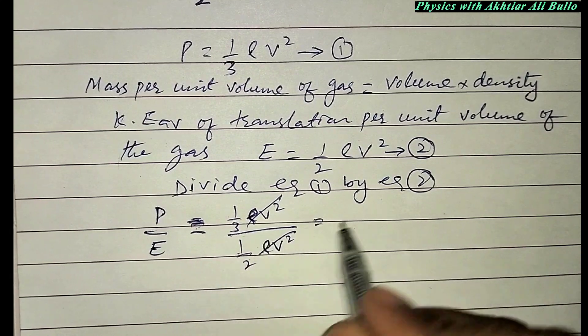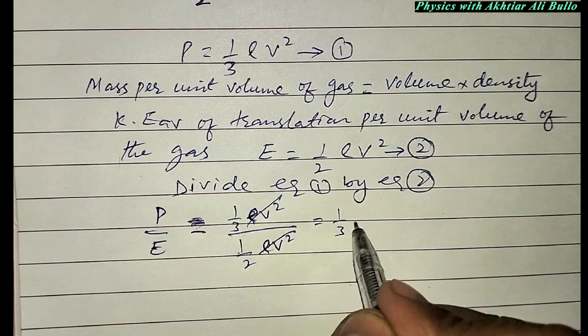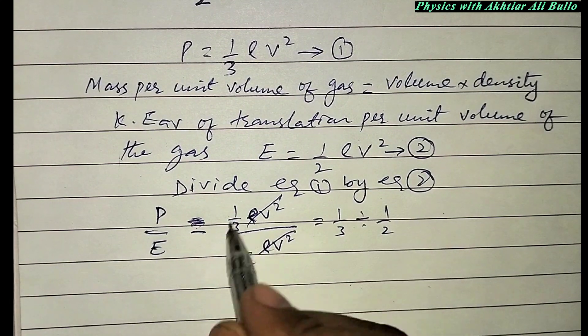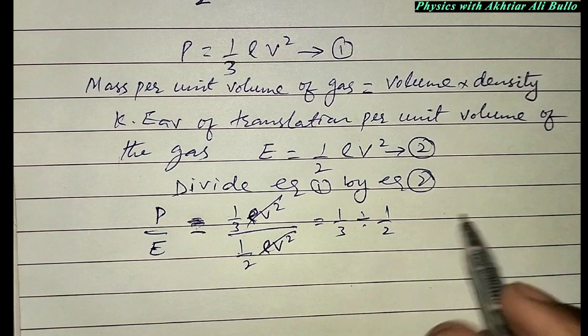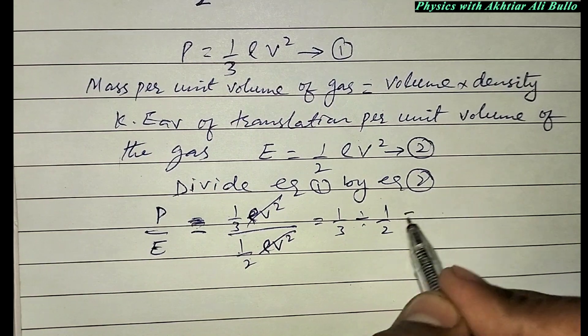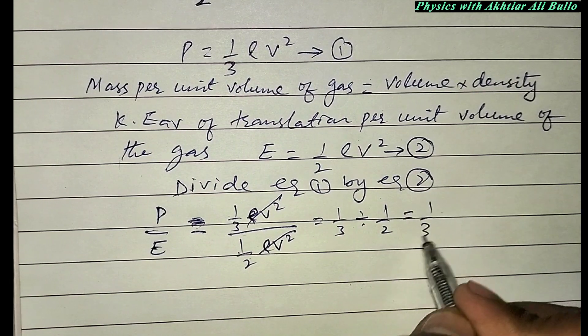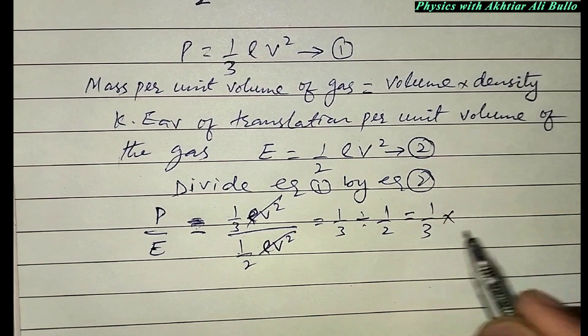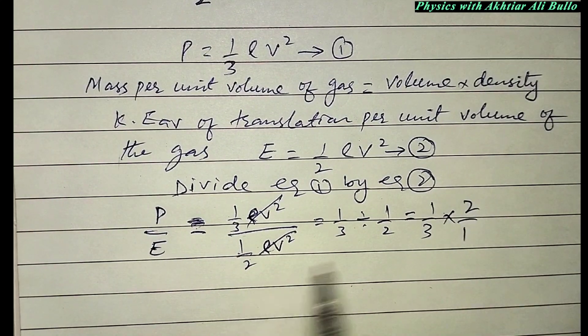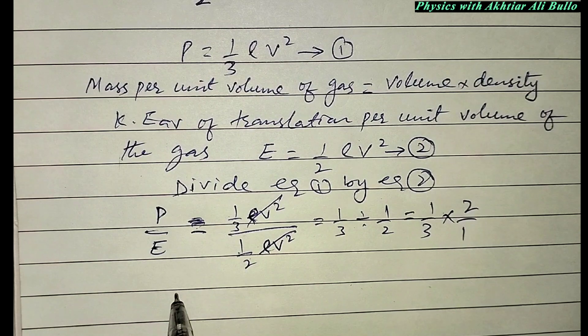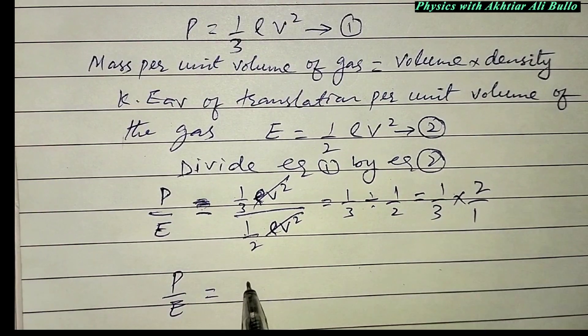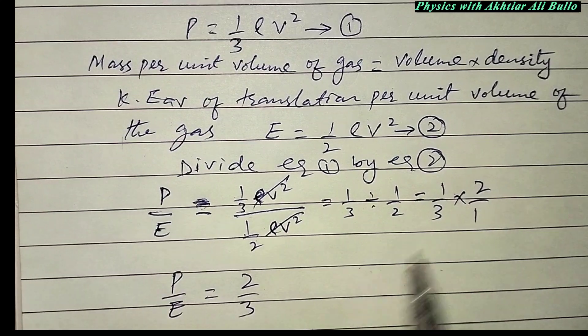This gives us (1/3) divided by (1/2). When we convert division into multiplication, we get (1/3) × (2/1) = 2/3. Therefore, P/E = 2/3.